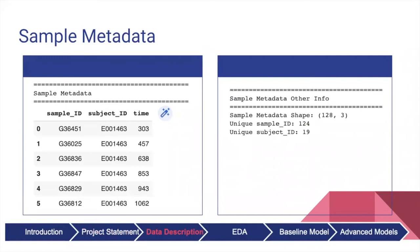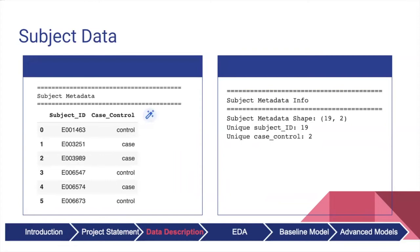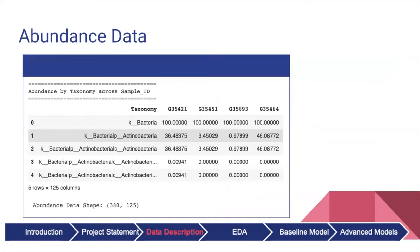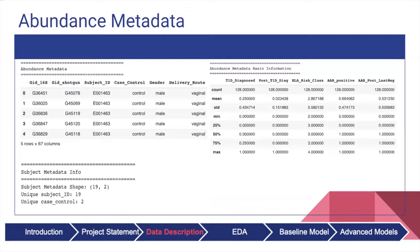Our dataset contains microbiome samples of 19 infants collected during the first 3 years, divided into 4 subsets of metadata and time series data. The subject metadata contains information about the subject, the collected sample, the time of data collection, and whether a subject is in a control group. The abundance data contains time series data of these samples broken down by taxonomy. The abundance metadata includes information such as delivery route and gender.